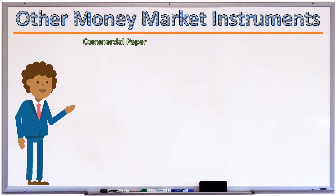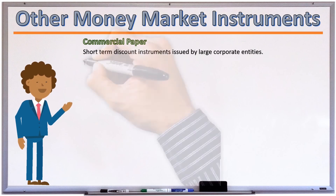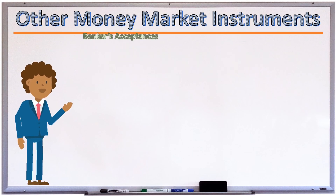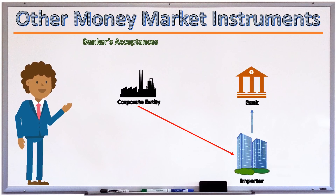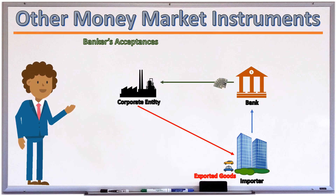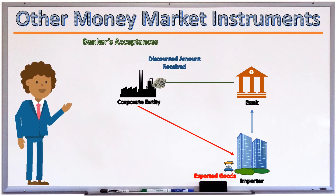Other money market instruments: Commercial paper consists of short-term discount instruments issued by large corporate entities, working in the same manner as treasury bills and are also unsecured. Bankers' acceptances are financial instruments often used in import and export transactions, whereby a corporate entity expecting to receive a payment from an importer would rather have a bank pay them the value of goods and services sold, usually as a risk mitigation measure. The bank pays the exporter a discounted value, and the bankers' acceptance referencing the receivable due from the importer could then be further sold into the market and traded as a financial instrument.